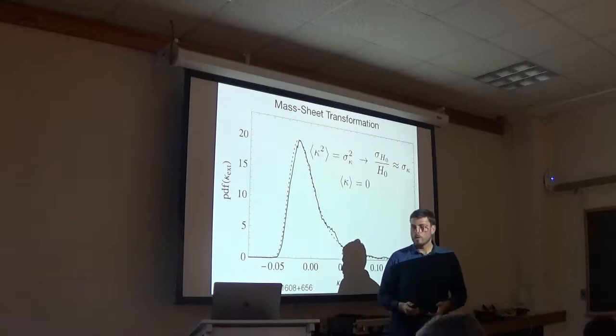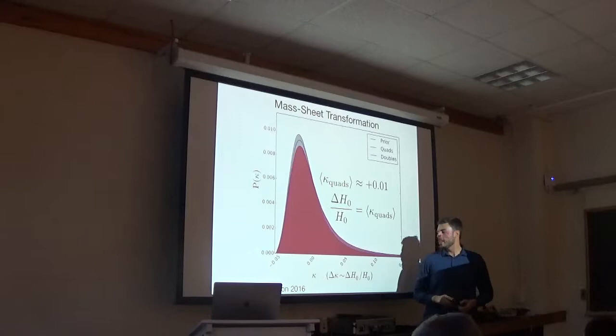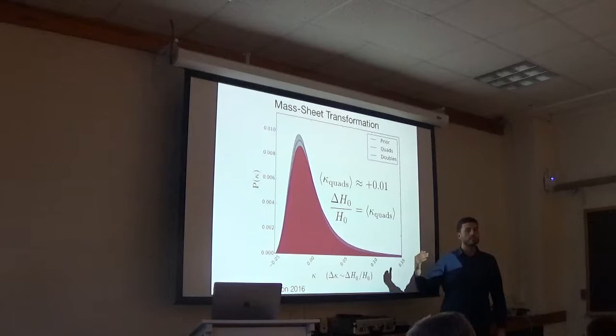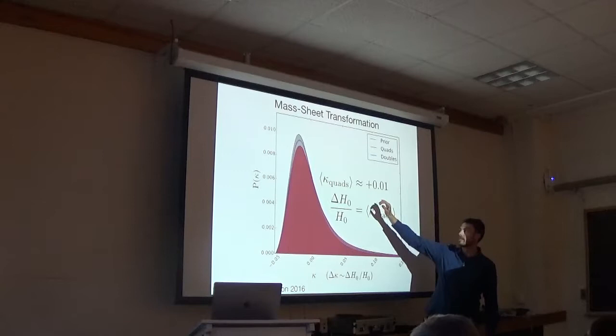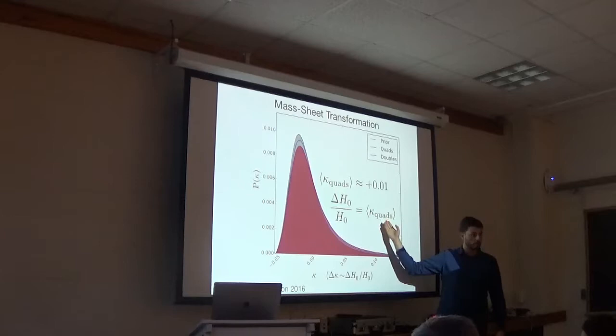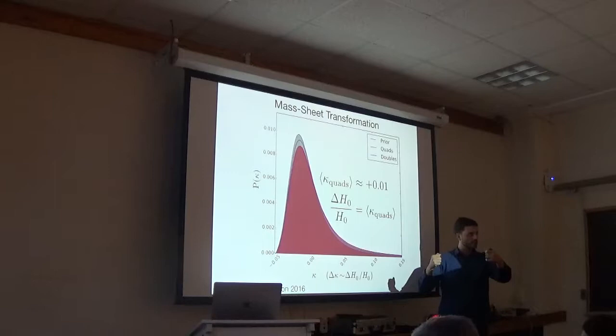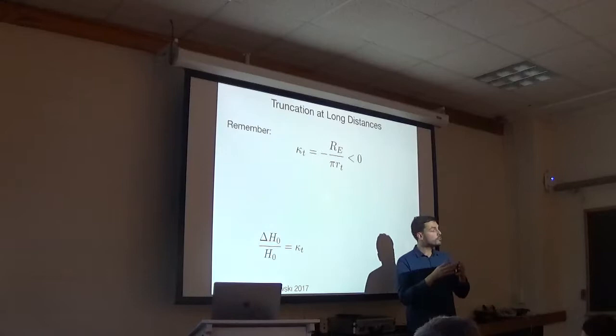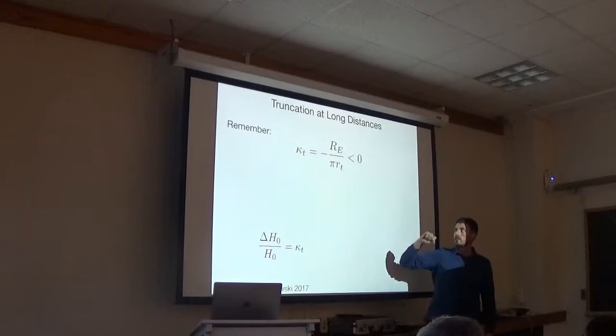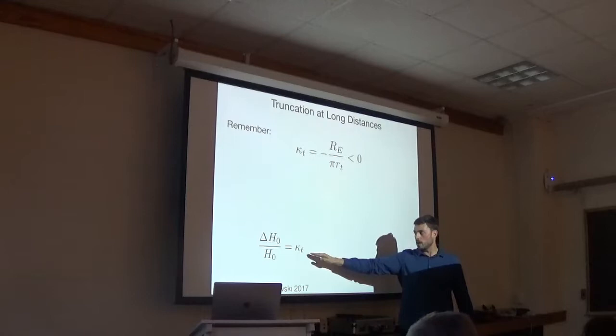And the hope is that measuring many systems would bring down this width. But also it's hoped that the average of these many PDFs or many lines of sight is zero, since in an FRW universe over-densities and under-densities tend to average out. As recently pointed out by Collett and Cunnington, the fact that we're observing strongly lensed quasars or quadruple lenses, these guys tend to live in overdense lines of sight on average. So this causes slight bias on the external convergence and thus a slight bias on H0.